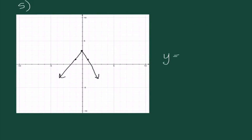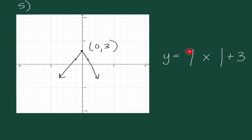Final problem of the lecture: the vertex looks like it's at 0, 3. Since the X value is 0, inside the absolute value I just write X — no need to write minus 0. The 3 is added after the absolute value symbol. For the A value, it looks like we're going down 2 and to the right 1, giving a slope of negative 2. So the equation is Y equals negative 2 times the absolute value of X plus 3.